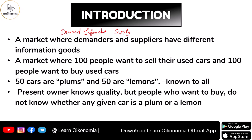In between these two sides, there is an important aspect called information. Whenever we say information, we consider the role of information related to the quality of the product. There is certain information known to the seller which the seller hides from the buyer, resulting in what is called information asymmetry — an imbalance of information between the buyer and the seller, where one party processes more information than the other.